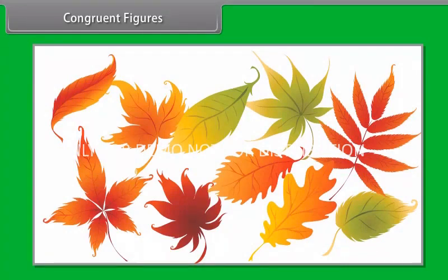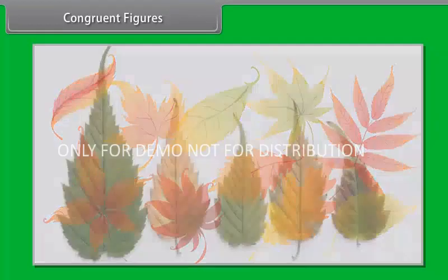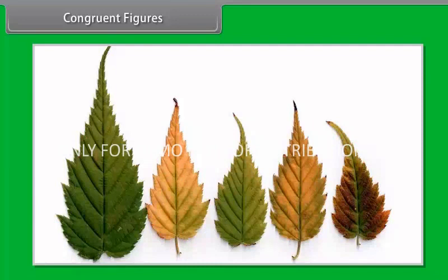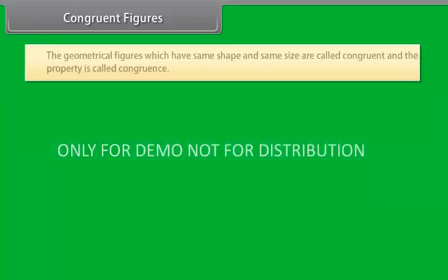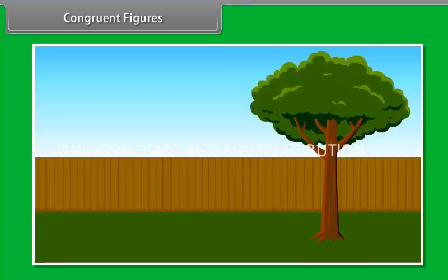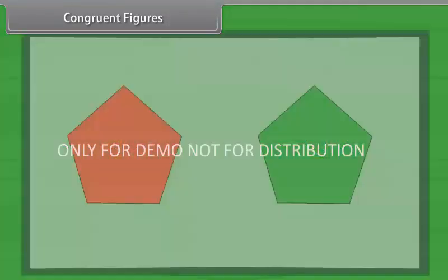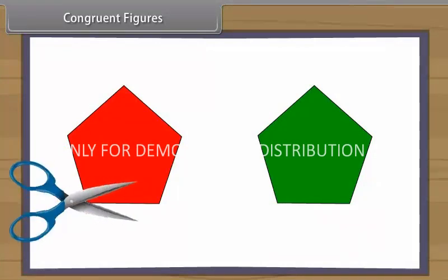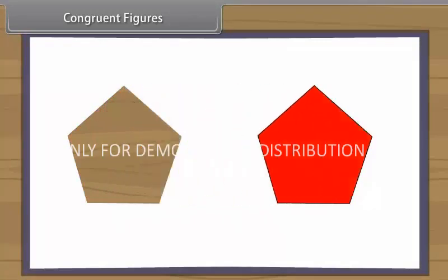Congruent figures. You might have observed that leaves of different trees have different shapes, but leaves of the same tree have almost the same shape, although they may differ in size. The geometrical figures which have the same shape and same size are called congruent, and the property is called congruence. Congruent objects are duplicates of one another. If two mathematical figures are congruent and you cut one figure out with a pair of scissors, it will fit perfectly on top of the other figure.